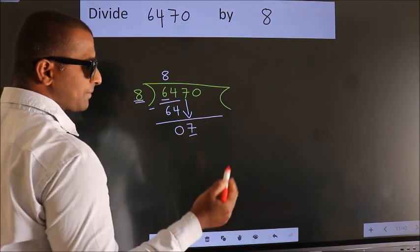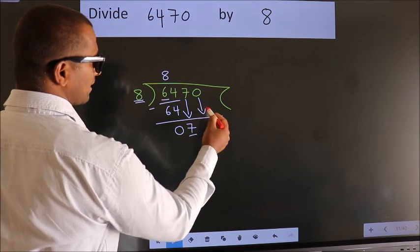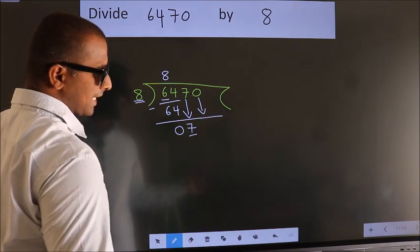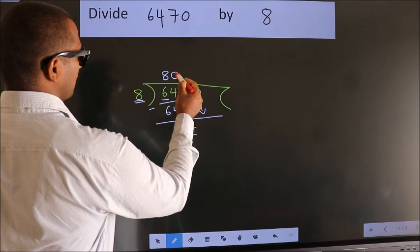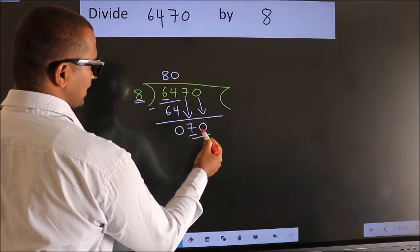So, we should bring down the second number. And the rule to bring down the second number is put 0 here. Then only we can bring down this number. So, 70.